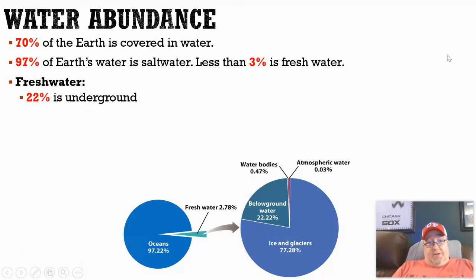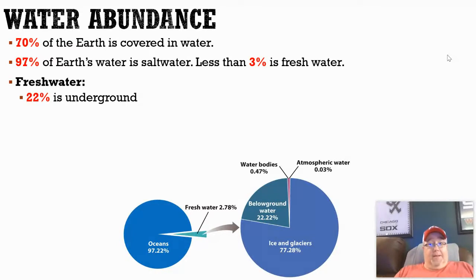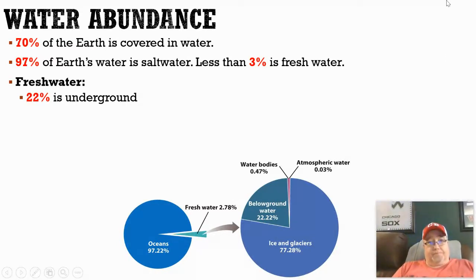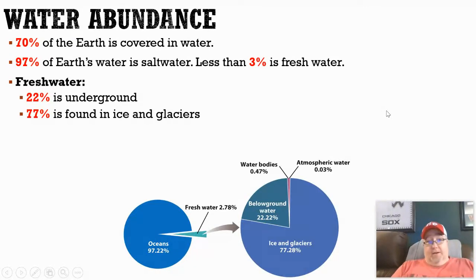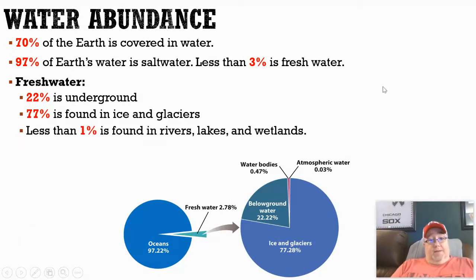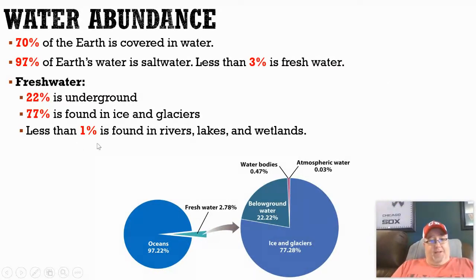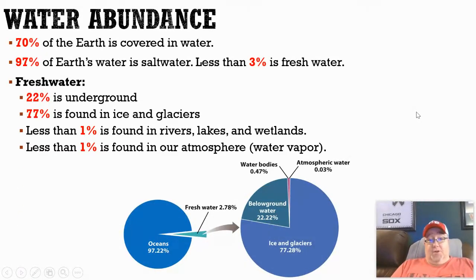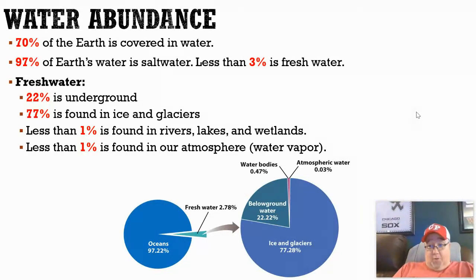As far as that freshwater goes, because there's not really that much of it, we want to understand where that water is. Of all our freshwater, 22% is underground — that's what this pie chart is showing us. 77% of all our freshwater is found in glaciers, trapped in ice. Less than 1% is found in rivers, lakes, and wetlands. Less than 1% is found in the atmosphere — that's the whole water cycle.